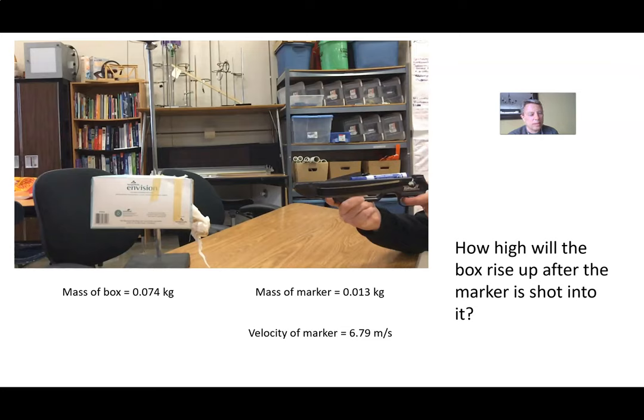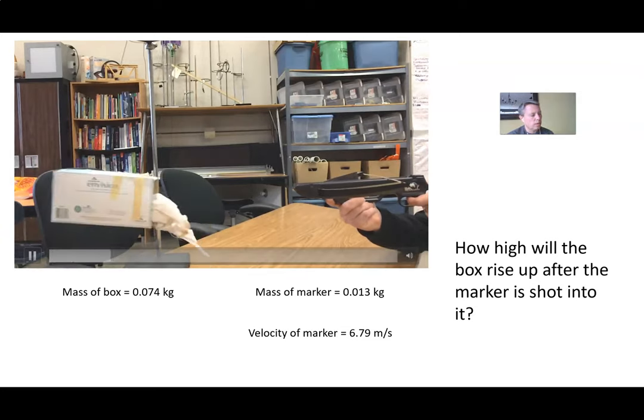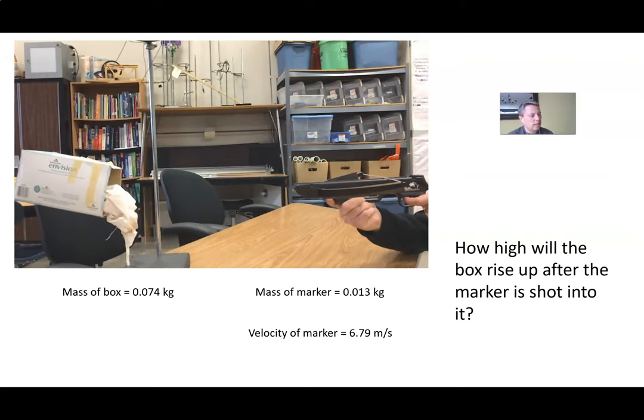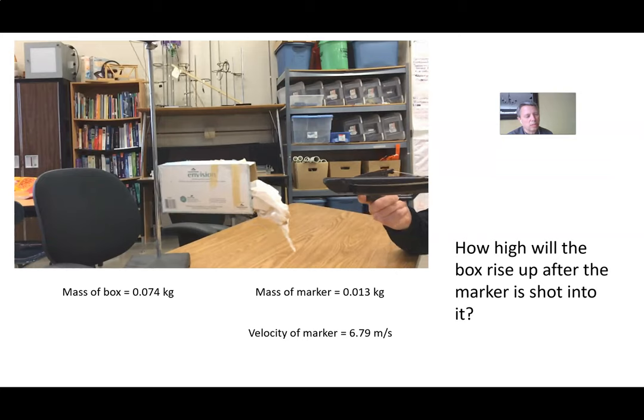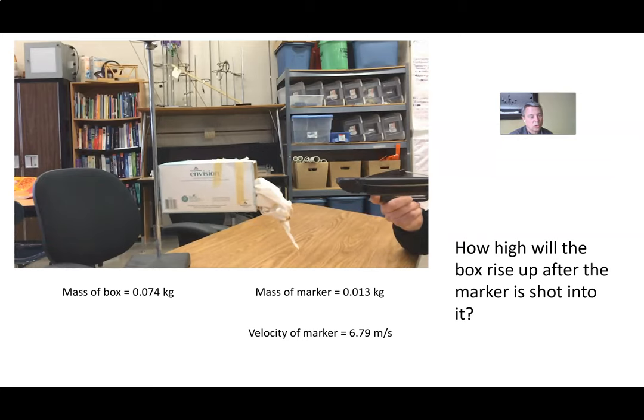Our big question for this activity is how high will the box rise after the marker is shot into it? So the first step is we're going to go ahead and see if we can watch our video. You can see that as the marker travels from the crossbow, it goes into the box and then the box is allowed to swing.